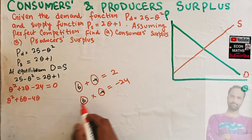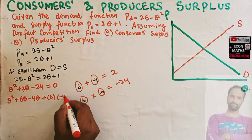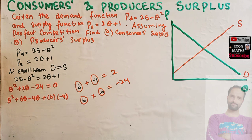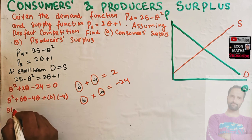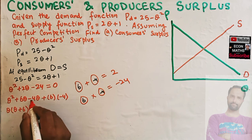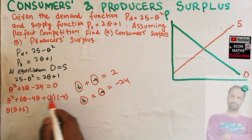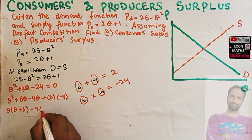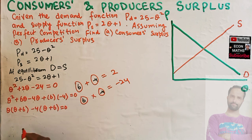So the expression becomes q squared + 6q minus 4q minus 24. We can write minus 24 as 6 times minus 4. Factoring the first two terms, we take q common to get q(q + 6). From the last two terms, we take minus 4 common to get minus 4(q + 6), and set it equal to zero.